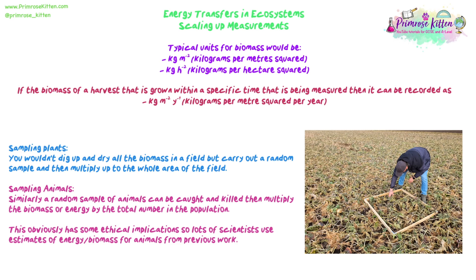Obviously catching, killing, and burning animals to find their biomass has ethical implications, so it wouldn't happen regularly unless absolutely necessary. Most scientists use estimates of energy or biomass from animals based on previous work, or work out how much biomass a certain size or age of animal would provide — or how much energy a certain size animal would contribute to the food chain.